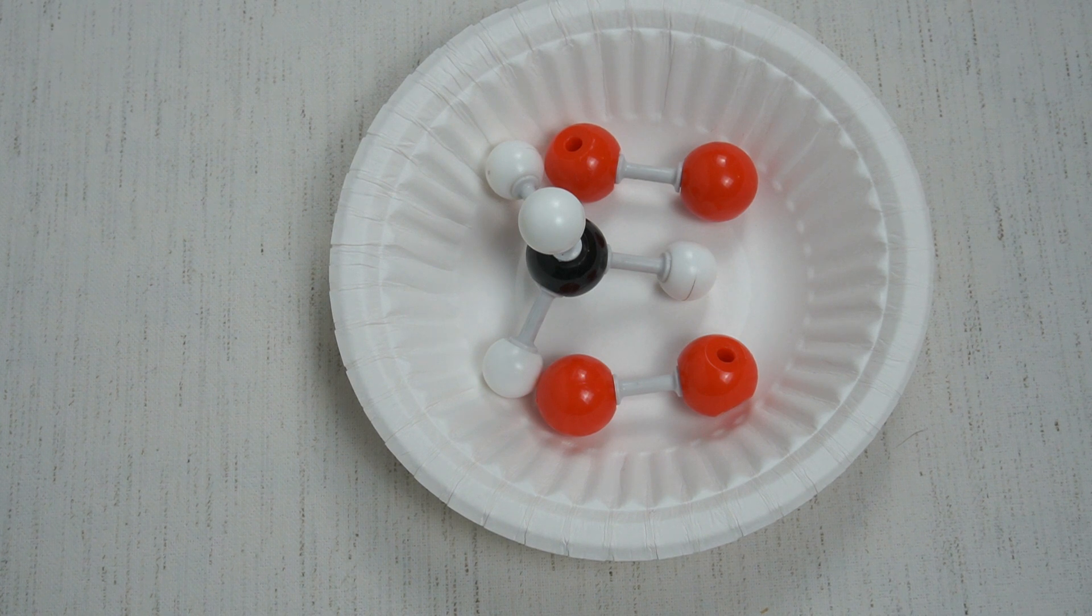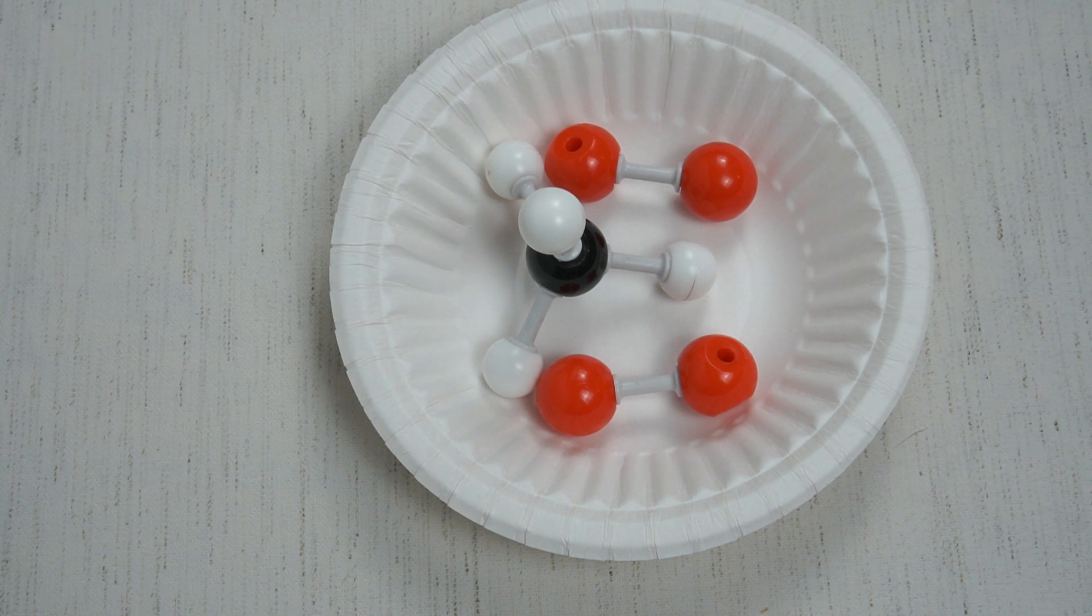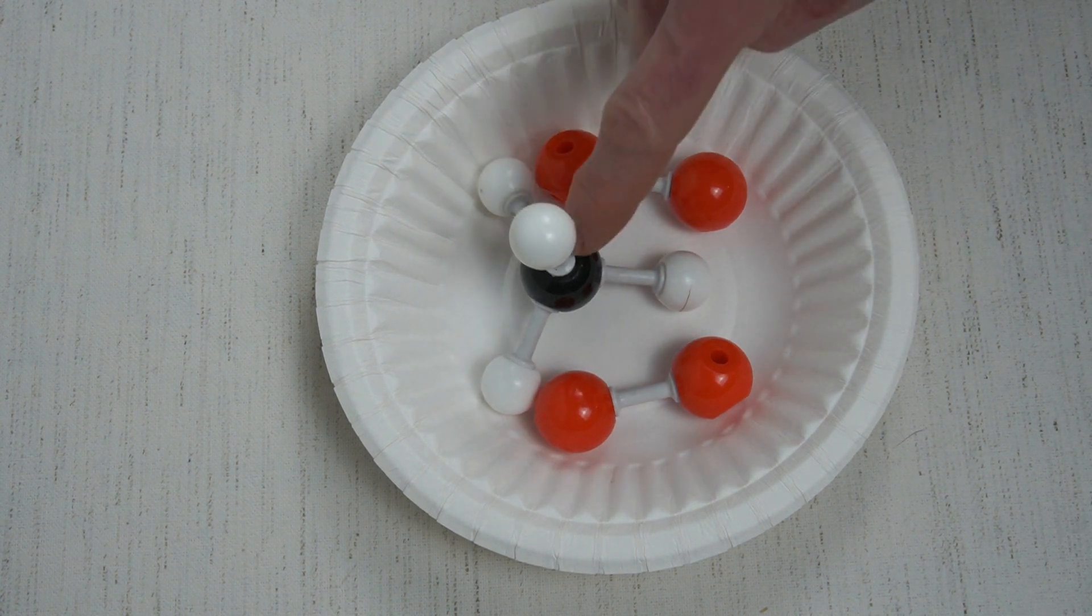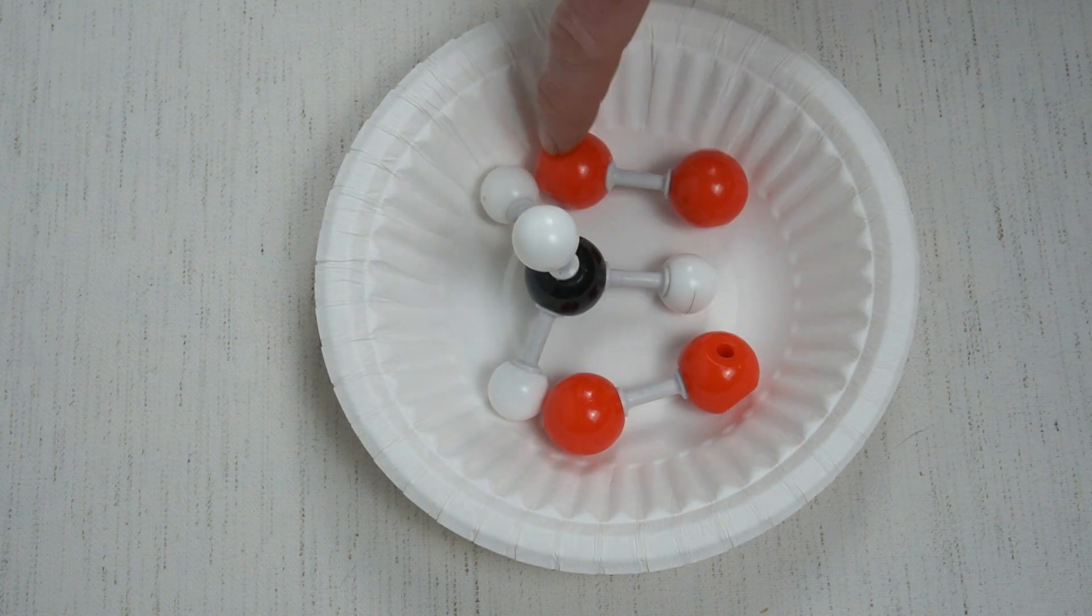We now have a recipe for combustion. The fire triangle says we need one more thing, a spark. But before we ignite our fuel, let's count our atoms again pre-combustion. We have one, two, three, four, five, six, seven, eight, nine atoms in total.